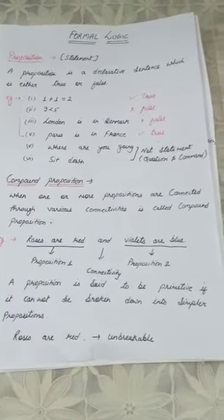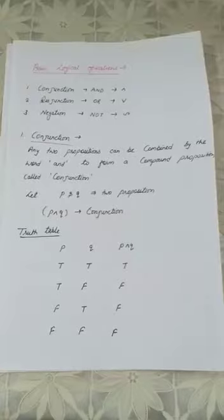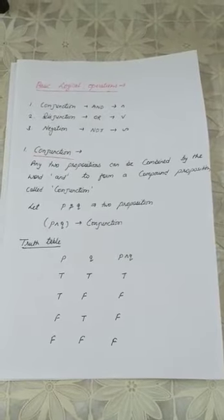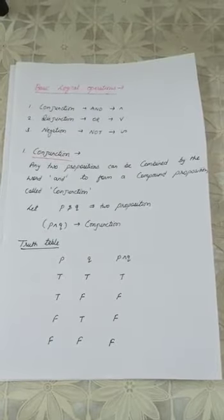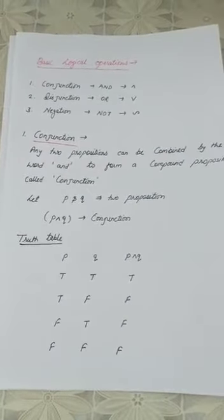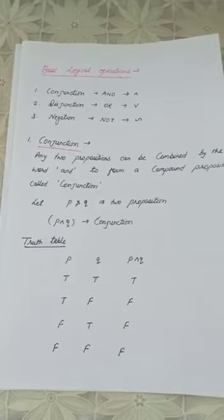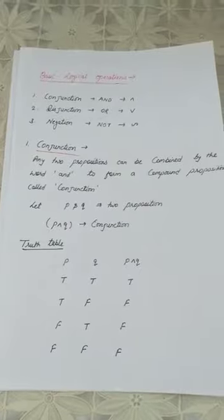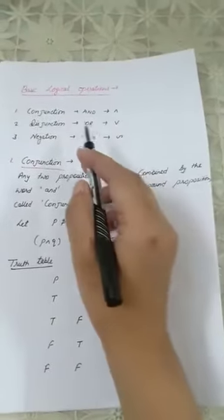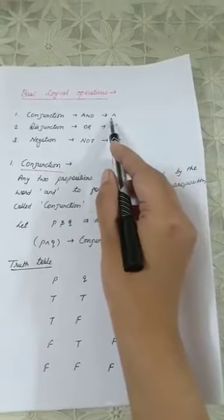Now you are clear what is a proposition, compound proposition, and primitive proposition. The next topic is simple basic logical operations. Basic logic operations are of three types: conjunction, disjunction, and negation. Actually, logical operations can be of many types, but the basics are conjunction, disjunction, and negation. That is 'and,' 'or,' and 'not.'